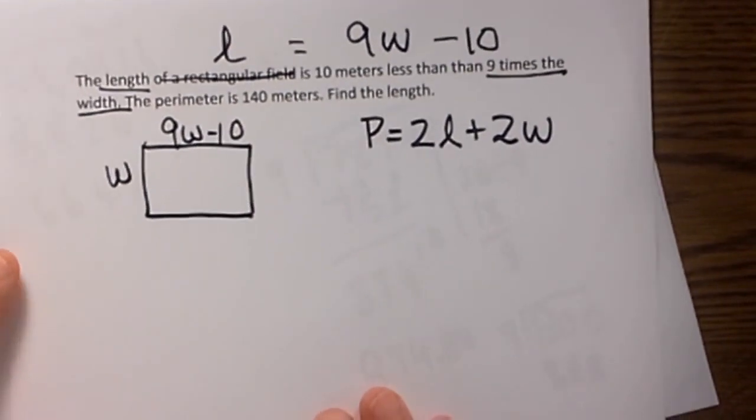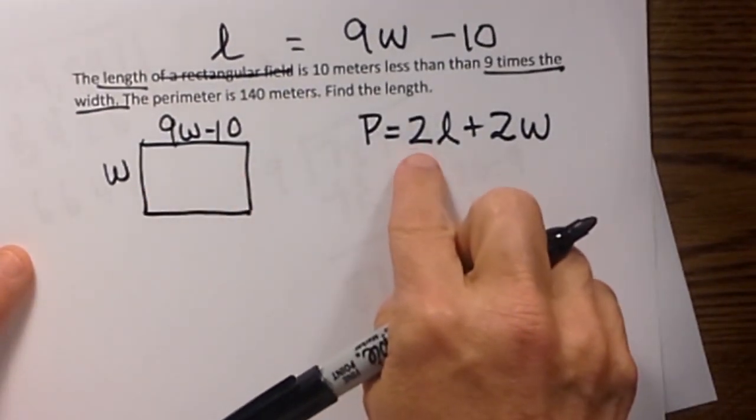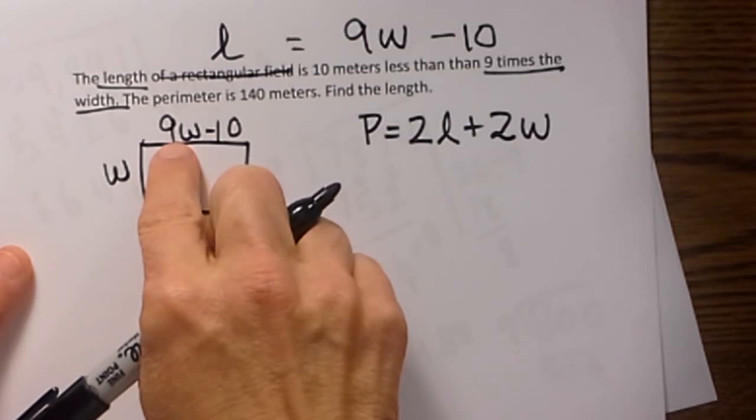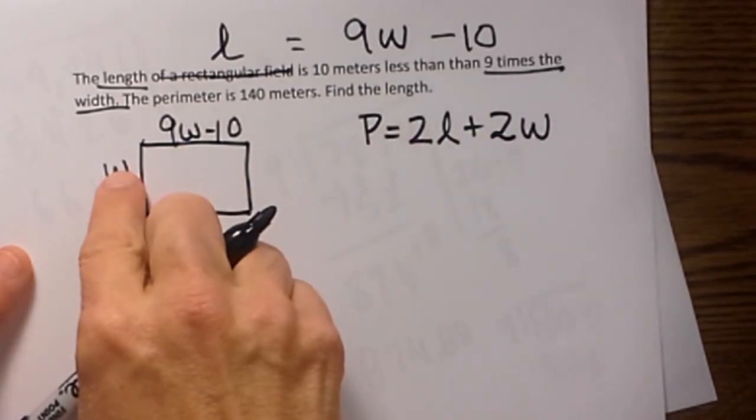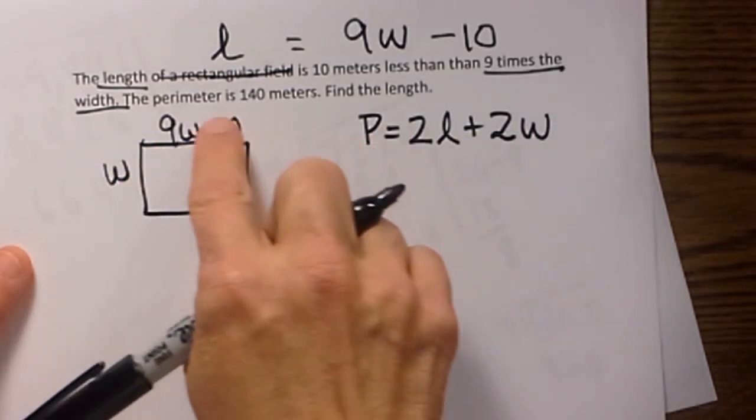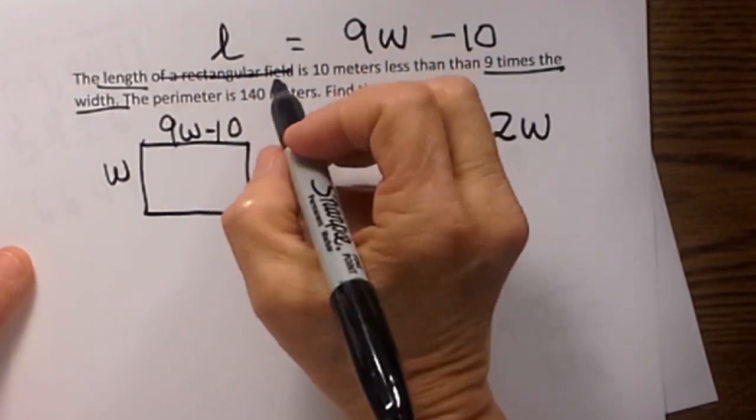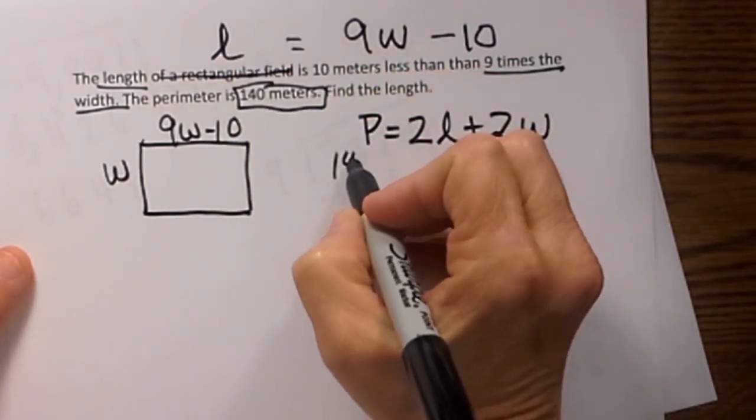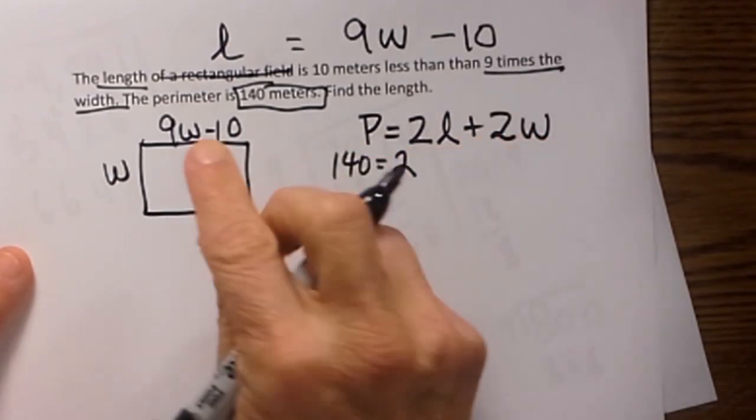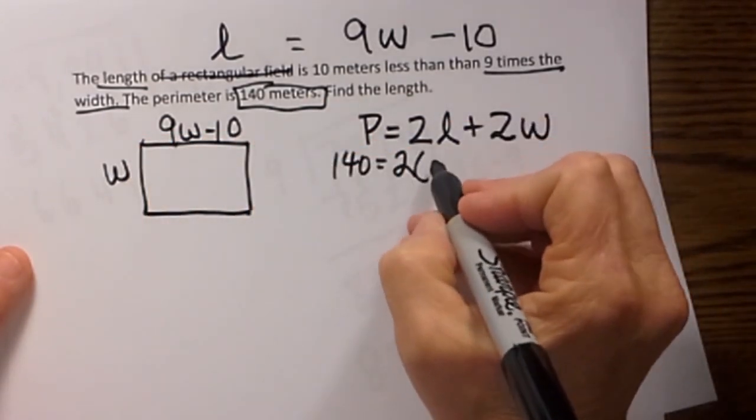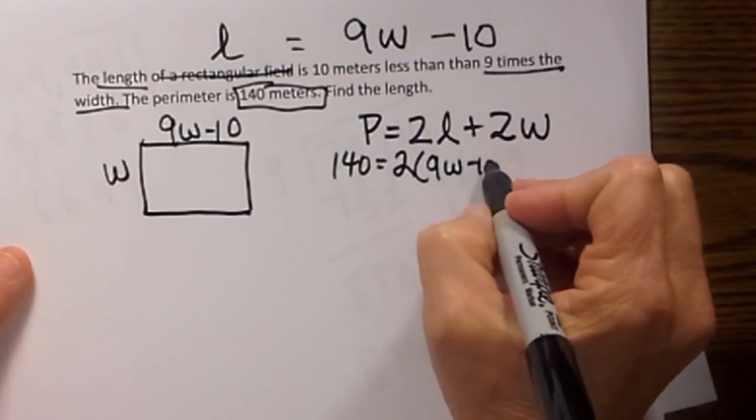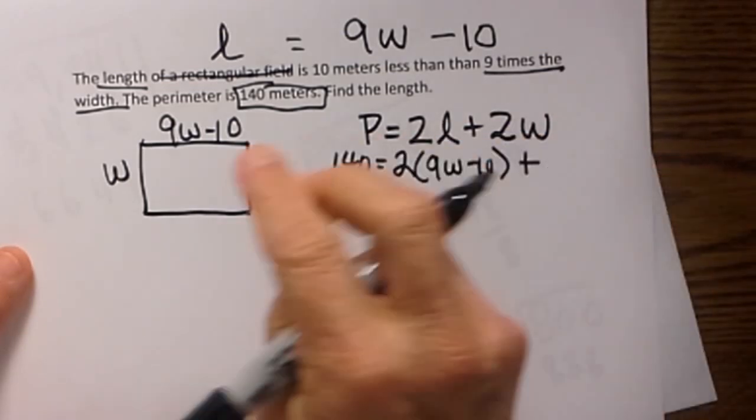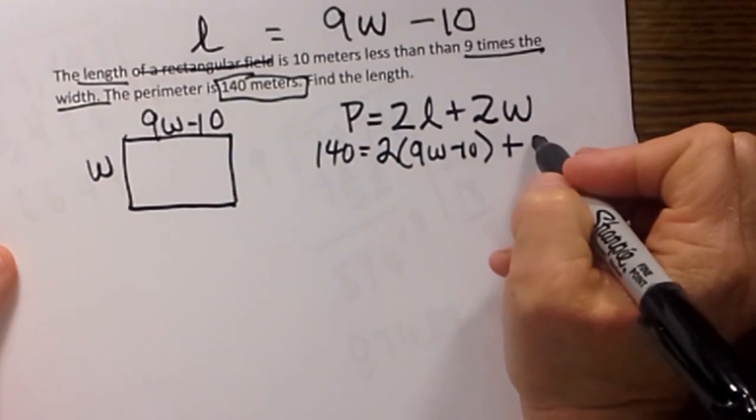Now let's plug in what we know. We know we have to take 2 of these lengths and 2 of these widths and it will equal our perimeter. Our perimeter is given to us, it is 140 meters. So let's plug in 140 here. And let's take 2 times this length which is 9W minus 10 plus 2 times our width. Well that's just 2W.